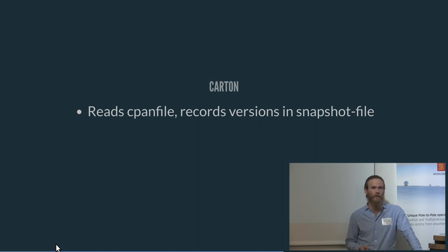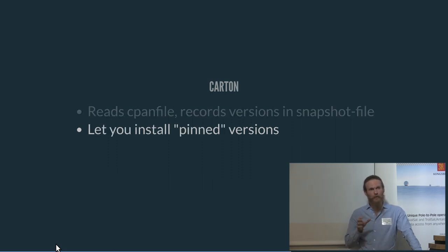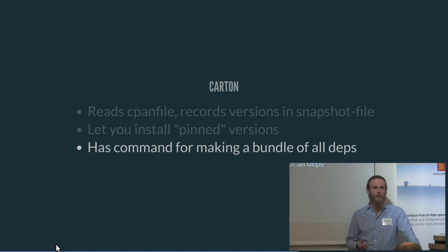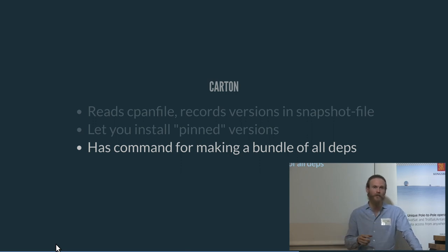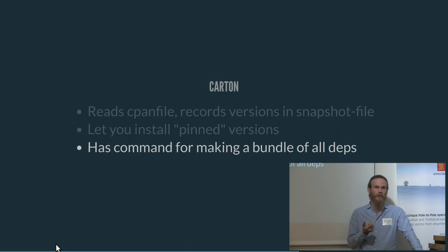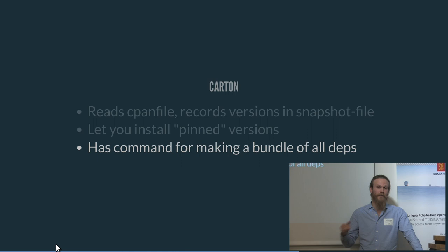So for Carton: it reads your cpanfile.snapshot and records whatever you installed. By using that facility, you can pin versions of modules. It's got commands to bundle the dependencies you rely on to one directory, so you can ship that with your application and have Carton install all your dependencies from that directory. This is especially relevant if you need to deploy to an environment where you have no internet access, so you cannot use cpanm the way you're used to. It's a great help and a great tool in that respect.